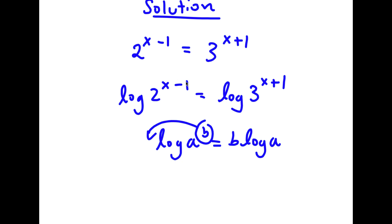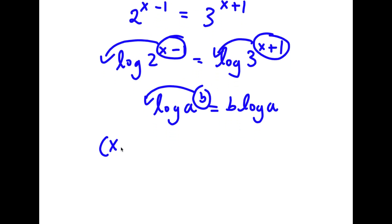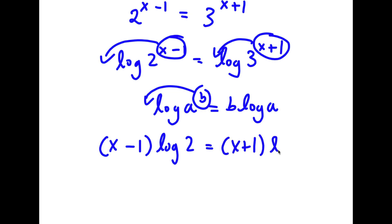So in this case, I have log 2 to the power of x minus 1, and I can move x minus 1 to the front. And log 3 to the power of x plus 1, I can move x plus 1 to the front. So now I have x minus 1 times log 2 is equal to x plus 1 times log 3.